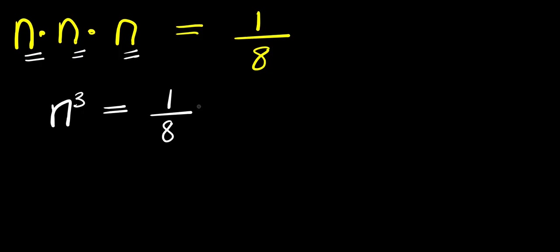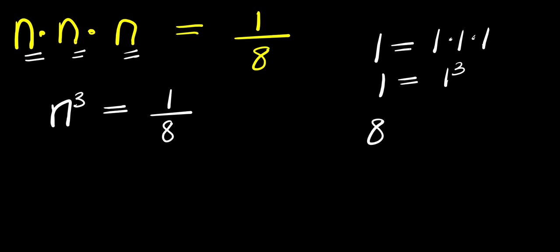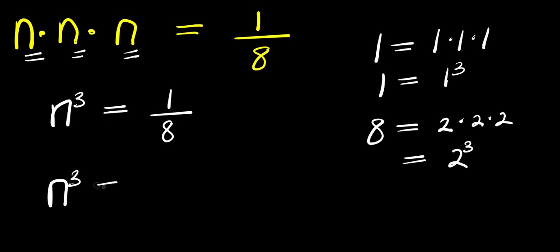Now what we can do is express 1 as 1 times 1 times 1, which is the same as 1 to the power of 3, and that is just 1. Now for 8, I can express it as 2 times 2 times 2, which is the same as 2 to the power of 3. So we have n³ equals 1³ divided by 2³.